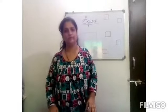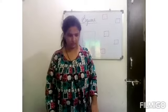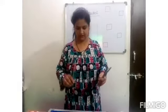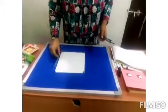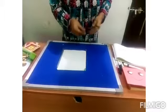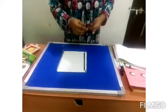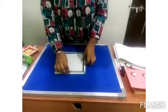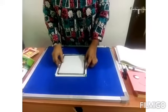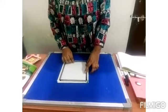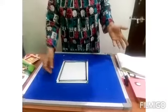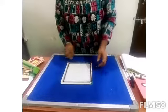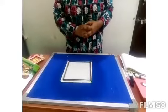Now I am going to show you how to make square shape using a pencil. Standing line. One more standing line. Sleeping line. And here also sleeping line. Make a square shape. Isn't it? Yes. Now it's a square shape.